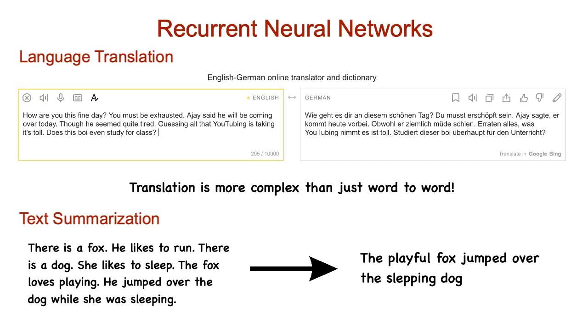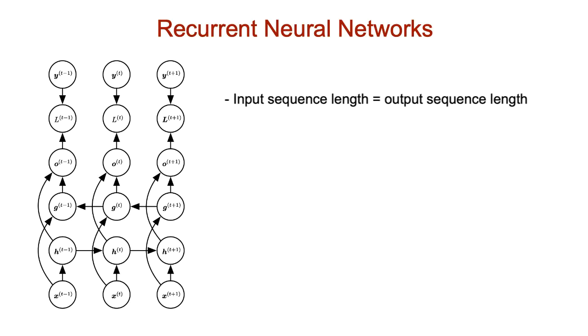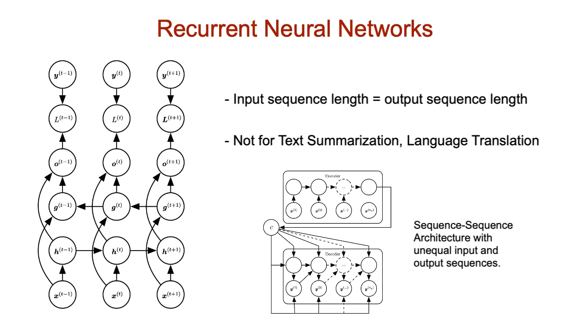However, bidirectional RNNs wouldn't be useful in real-time applications where the future input isn't known. Like, in the case of self-driving cars, or any type of streaming data. Technically, the text summarization and language translation applications don't use RNNs in this specific architecture. Here, the length of the input sequence needs to be the same as that of the output sequence. This isn't the case, though, for language translation, as a ten-word sentence in English can have a six-word translation in German. So instead, we would use a bidirectional architecture with unequal input and output sequences.